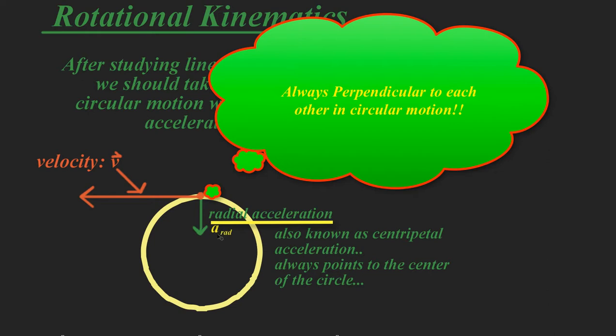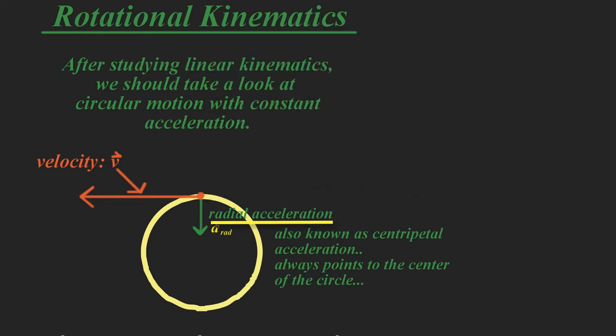This is called the radial acceleration, or sometimes referred to as the centripetal acceleration. And it always points to the center of the circle.